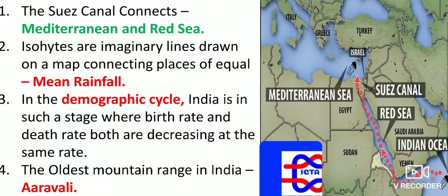Isohyets are imaginary lines drawn on a map connecting places of equal mean rainfall. When there is equal pressure, those lines are called Isobars. In the demographic cycle, India is in a stage where both birth rate and death rate are decreasing at the same rate.